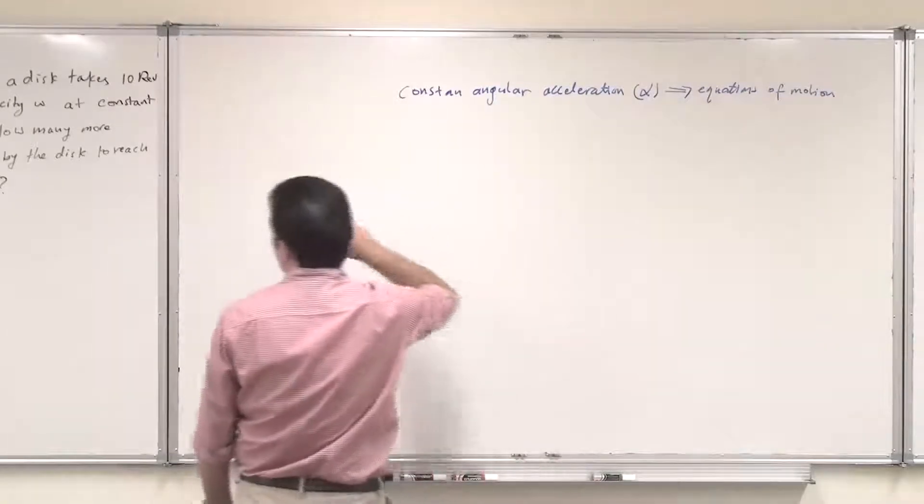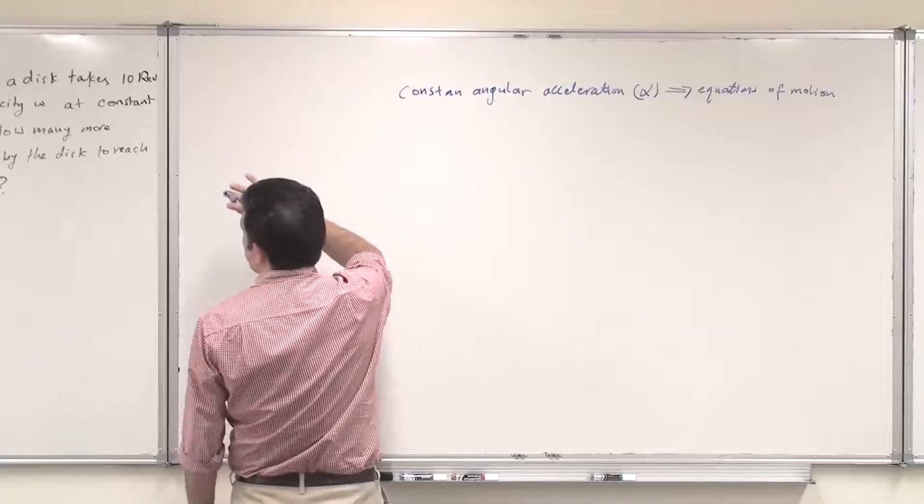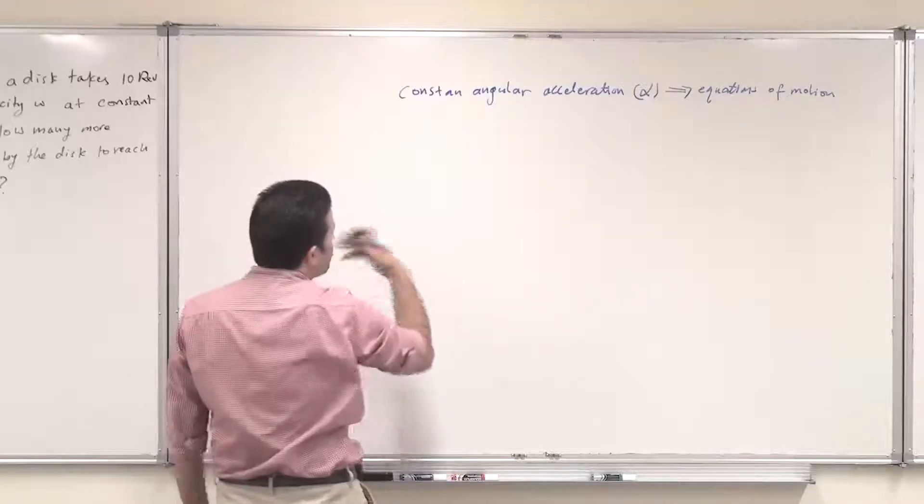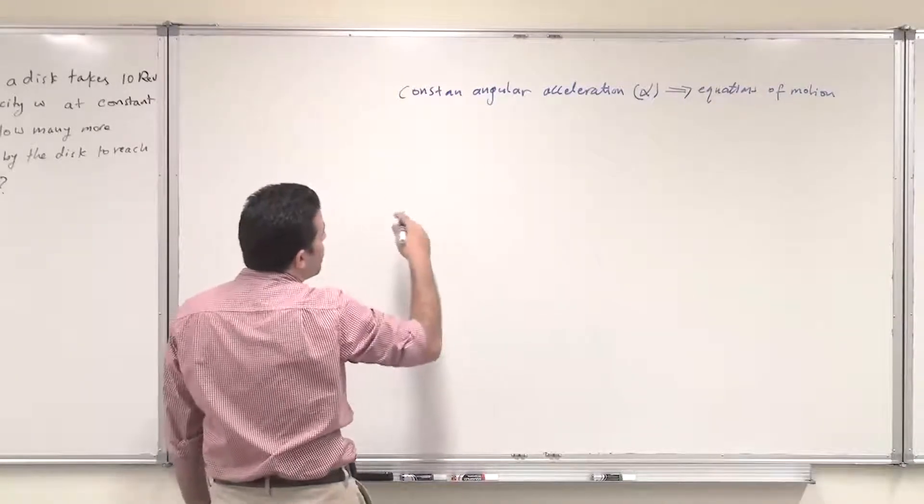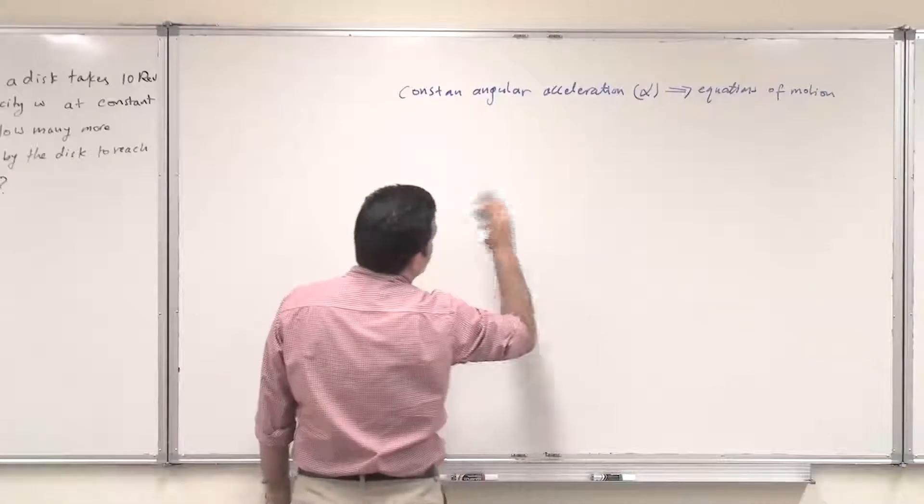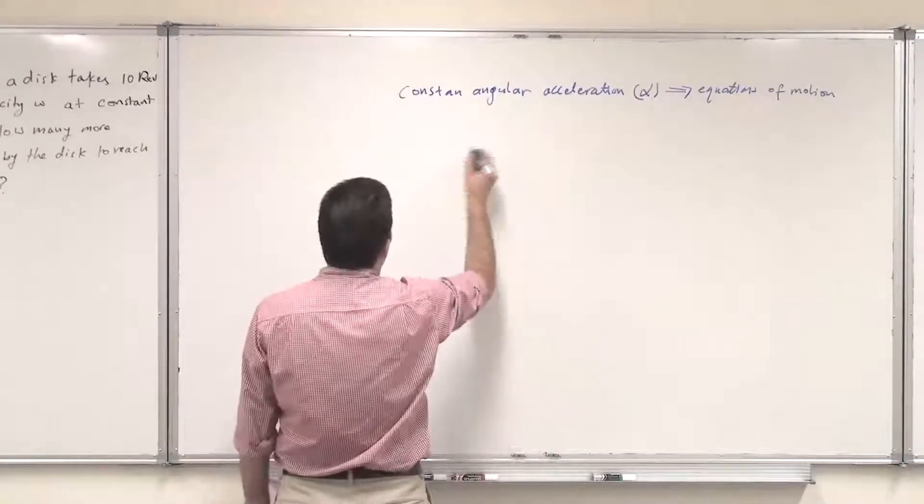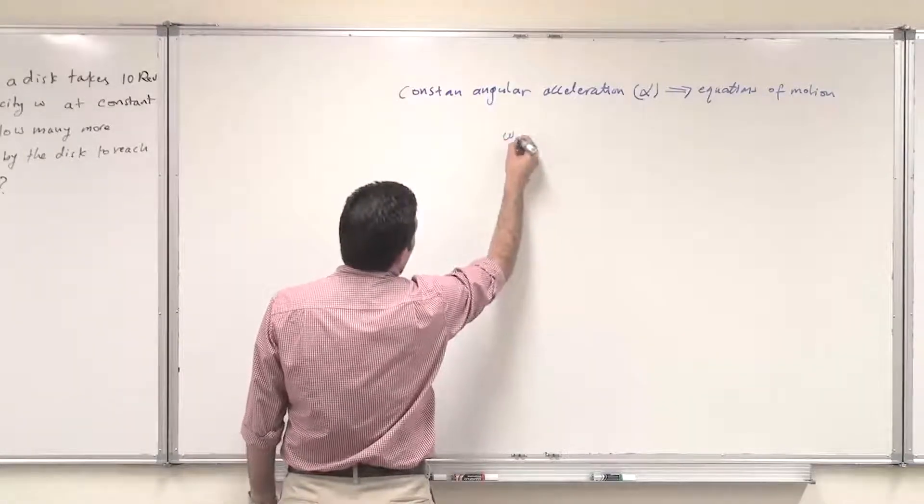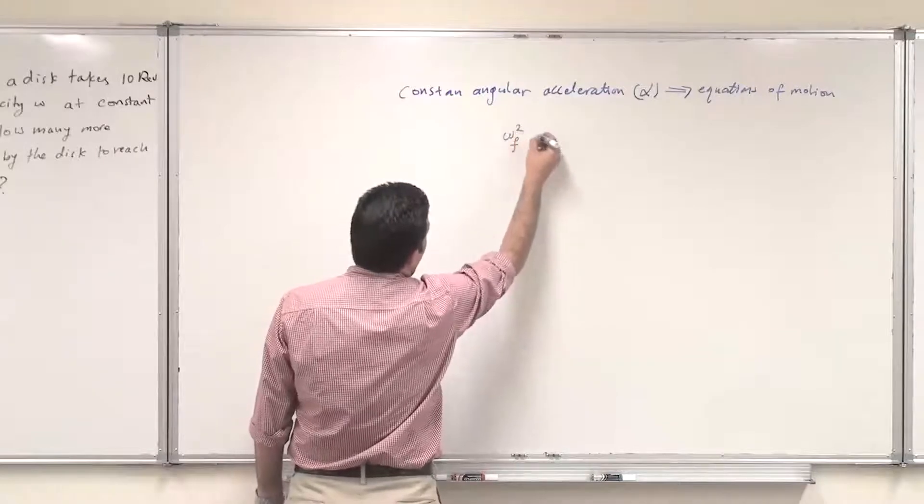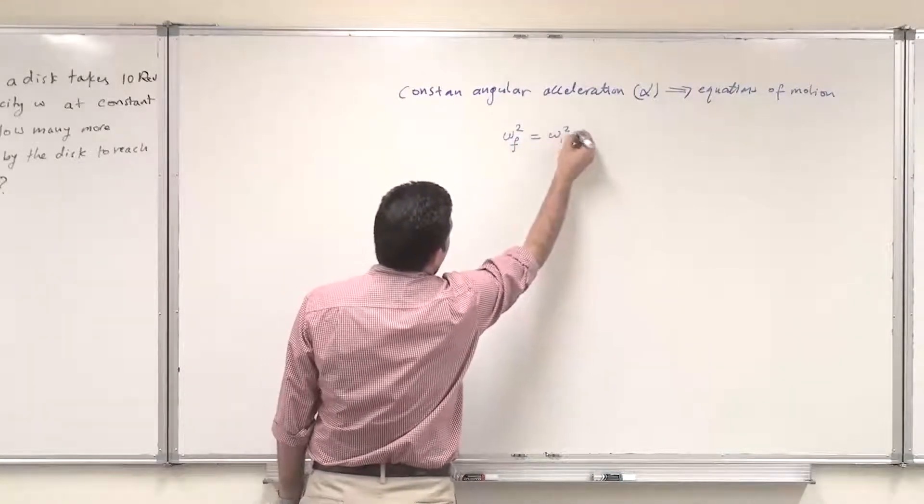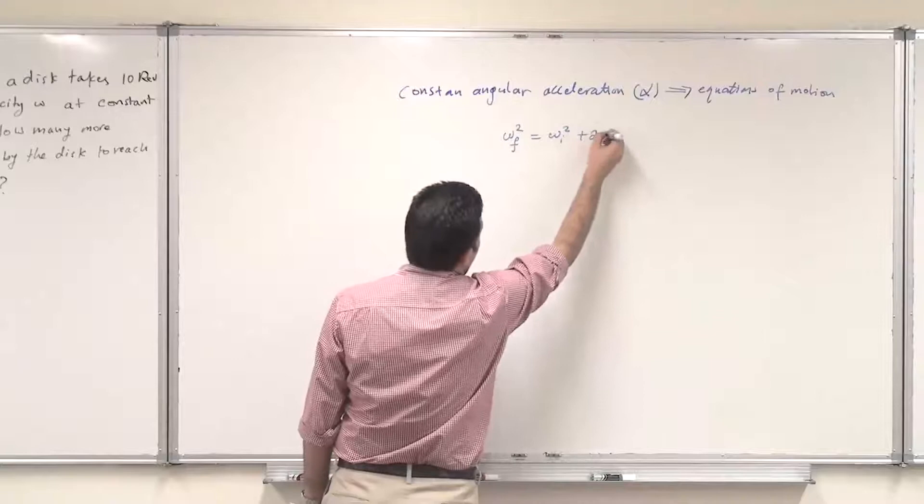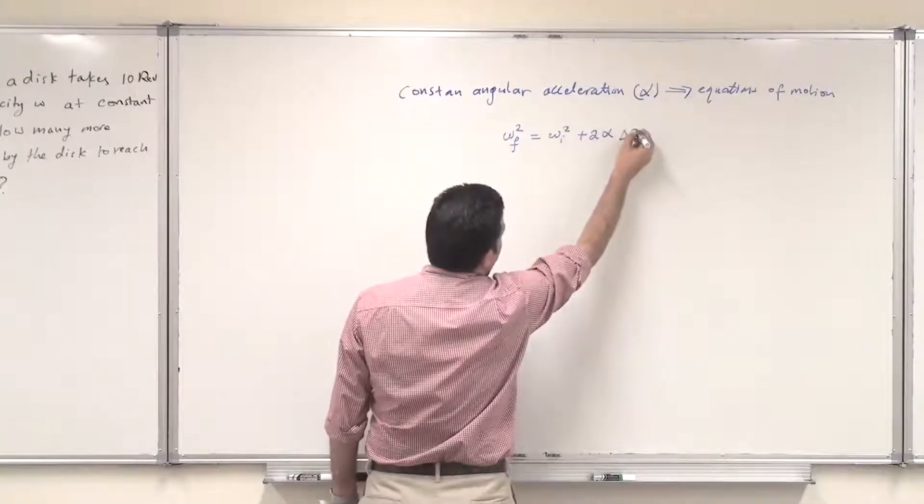In order to find how many more revolutions are required for 2 omega, we first get omega final for the first case. So we have this equation: omega final squared equals omega initial squared plus 2 alpha delta theta.